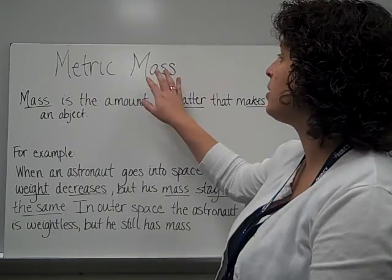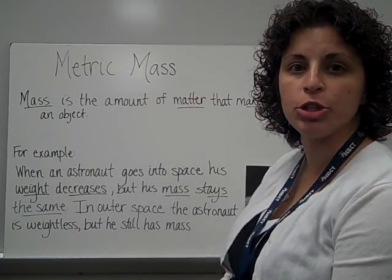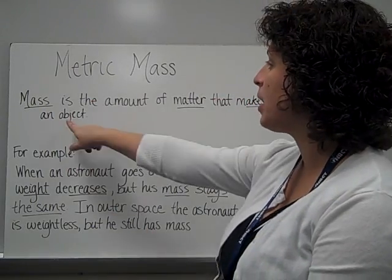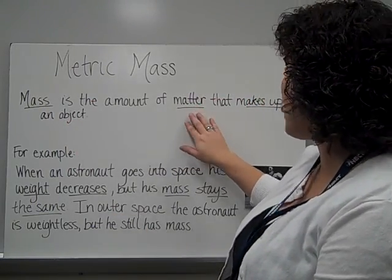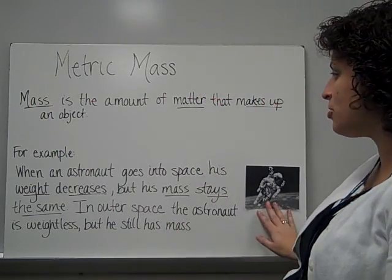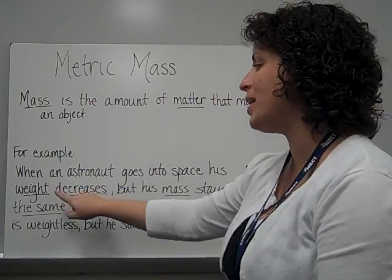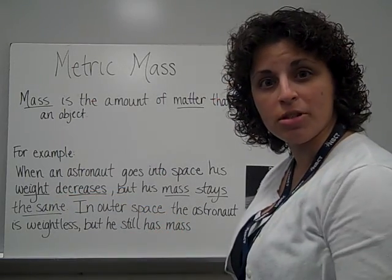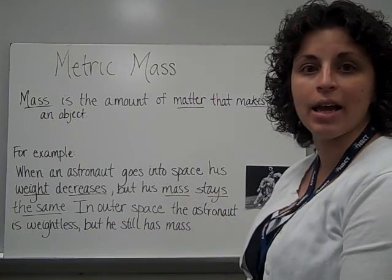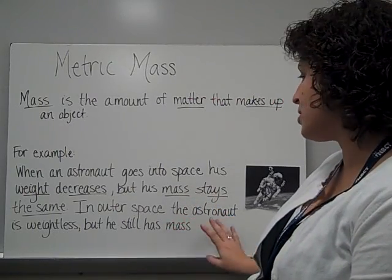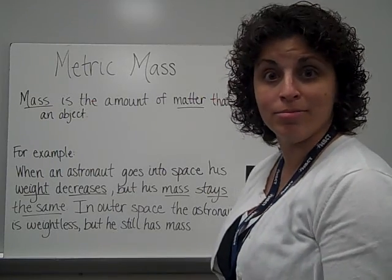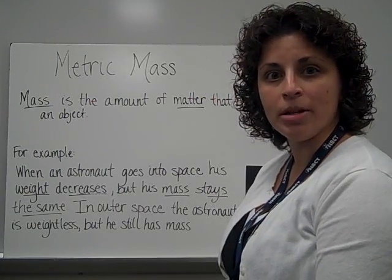In the metric system, weight is referred to as mass. It's a little bit different from weight. Here's how. Mass is the amount of matter that makes up an object. For example, when an astronaut goes into space, his weight decreases. That's because there's zero gravity. But his mass stays the same. In outer space, the astronaut is weightless, but he still has mass because it's still the same person, just in a different environment.